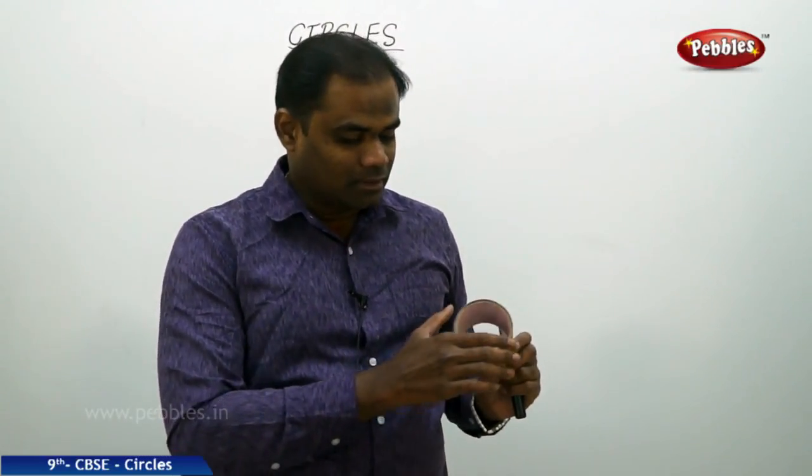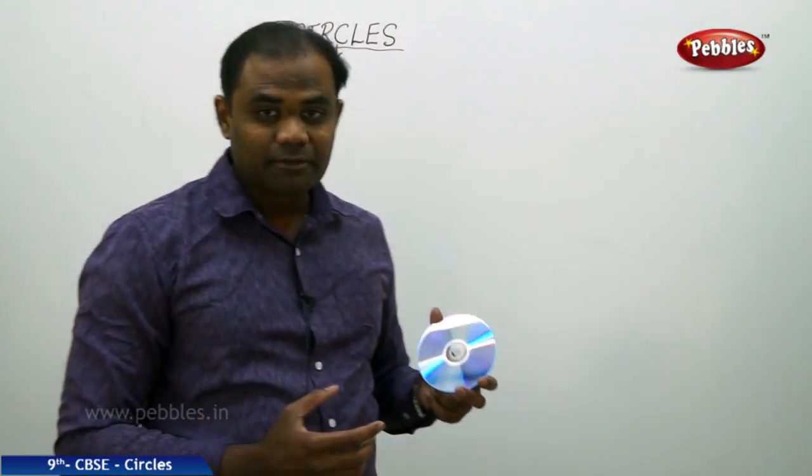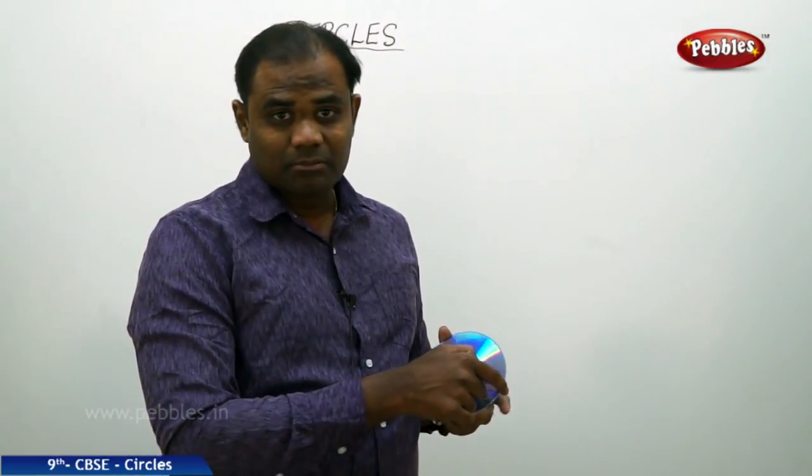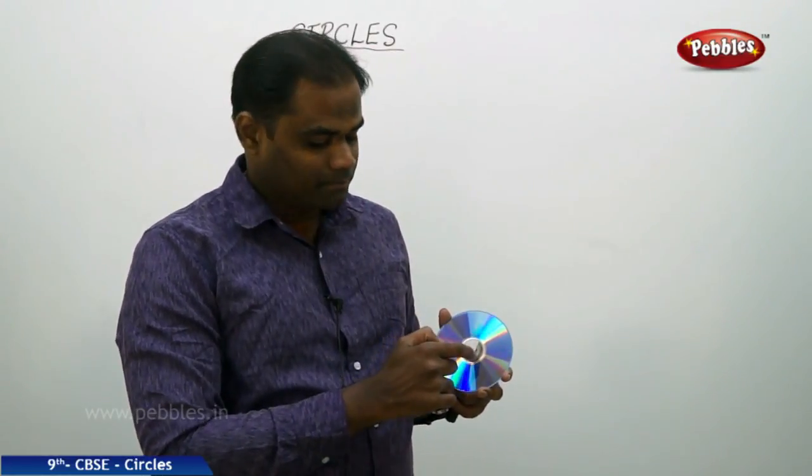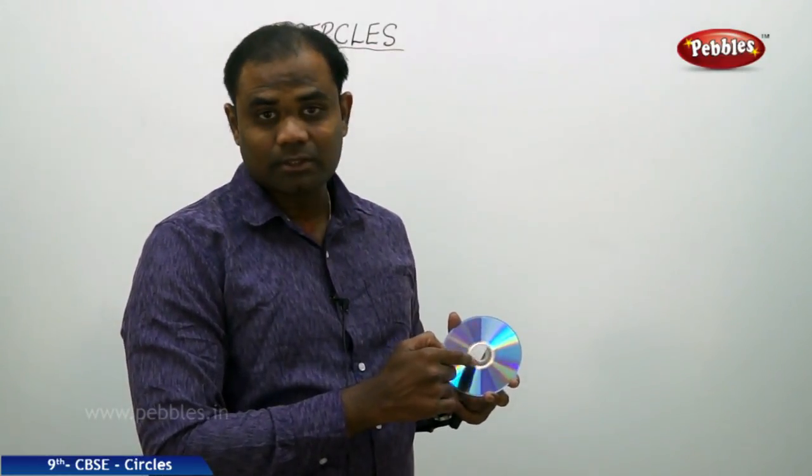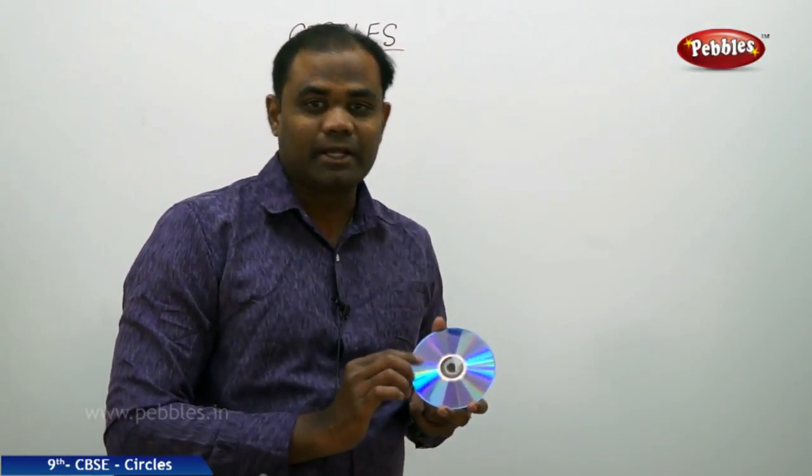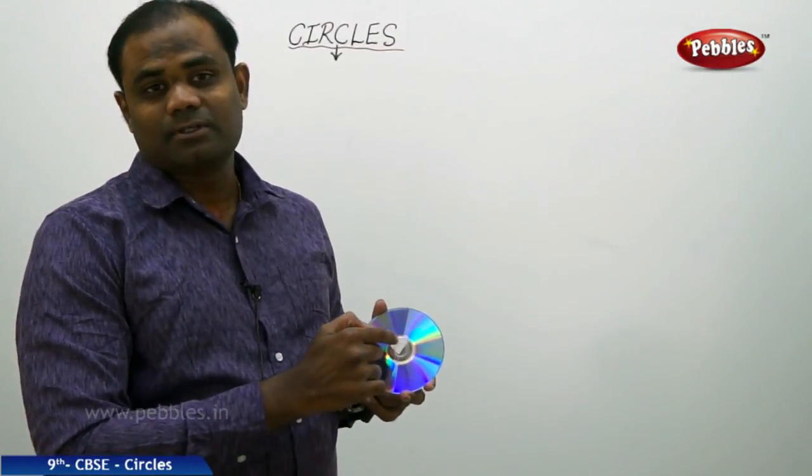In this case, the rim is a circle but the face, the width face is not a circle. Similarly, I have a disc which has many different circles as can be identified. One of the outer circle is this because it is circular in shape. The other circle is the rim out here and there is one more inner circle. So these are the different sizes of the circles which are identified in the disc. The bigger circle, the next bigger circle, and the smaller circle.